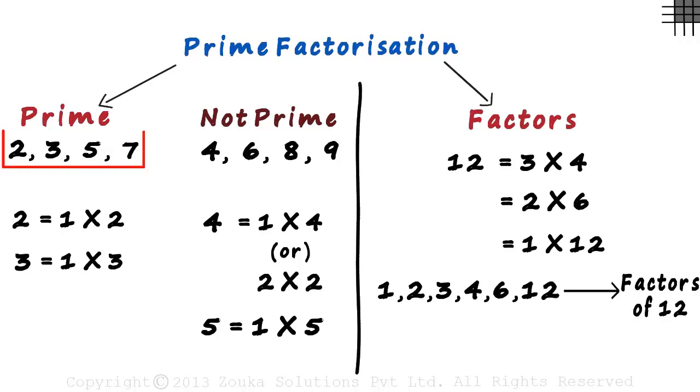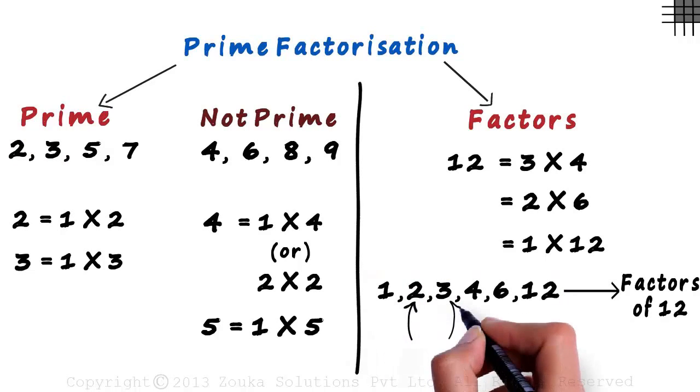You know what prime numbers mean. You also know what factors mean. So now you can easily see what prime factors mean. It's simple. Factors of a number which are prime. Look at the factors of the number 12. It has two prime factors: 2 and 3.